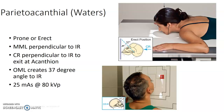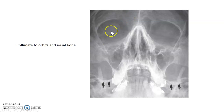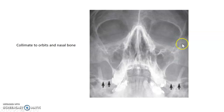Waters — you guys know Waters. We've done Waters for skull, sinuses, facial bones, and now for nasal bones — same positioning. MML perpendicular, you're going to exit at the acanthion, and the OML creates a 37-degree angle. You are going to collimate closely. I do not want to see the entire skull for a nasal bone view. You can cone in close as long as you have the orbits and the nasal bone. If there's C-spine on there, I'm going to be mad.